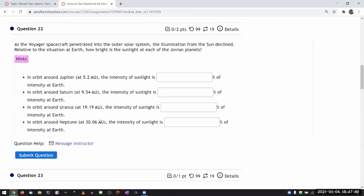Okay, let me read this question first and kind of skimming through it. I didn't recognize it fully, so let me see. As the Voyager spacecraft penetrated into the outer solar system, the illumination from the sun declined relative to the situation on Earth. How bright is the sunlight at each of the Jovian planets?